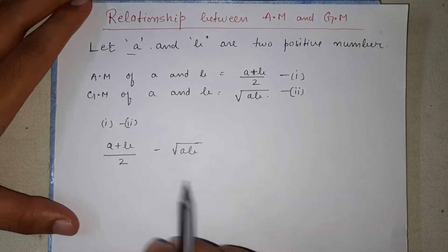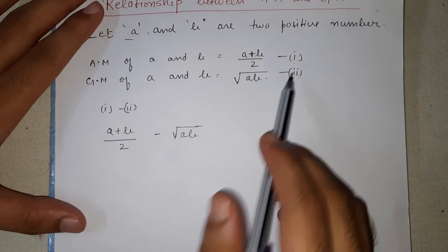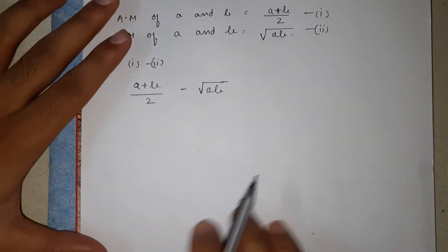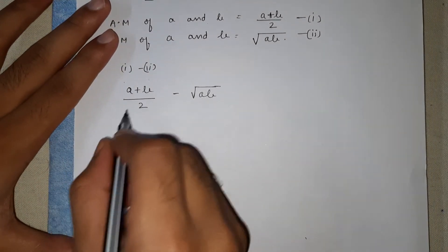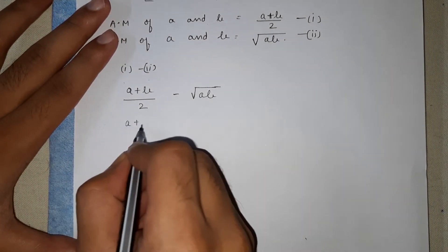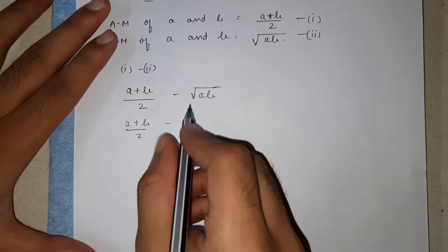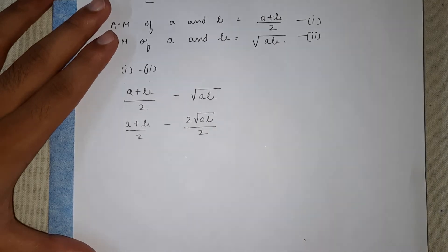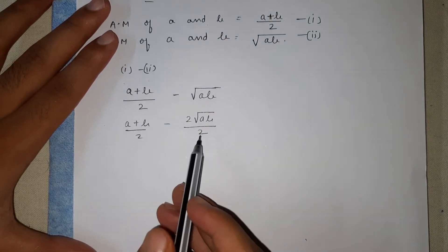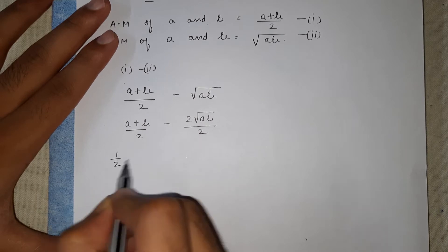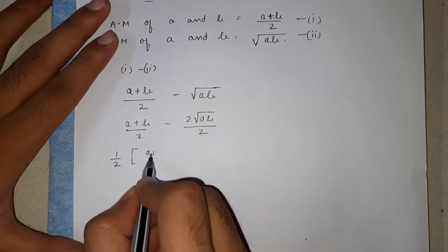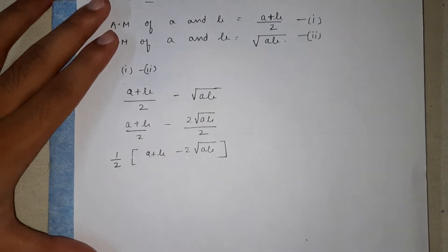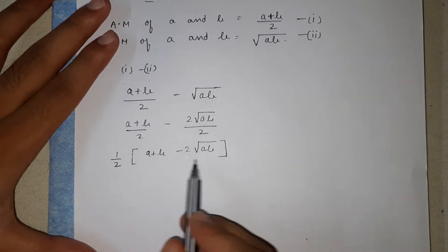Now we will subtract equation two from equation one, that is (a + b)/2 minus √(ab). We multiply two in the numerator and denominator to get a common denominator, and then take one-half common, giving us (1/2) × (a + b − 2√(ab)).